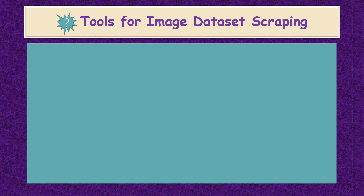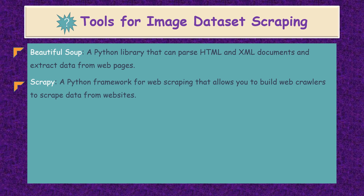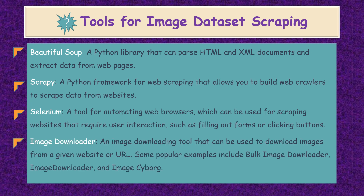Here we are discussing the tools for image dataset scraping. BeautifulSoup is a Python library that can parse HTML and XML documents and extract data from web pages. Scrapy is a Python framework for web scraping that allows you to build web crawlers to scrape data from websites. Selenium is a tool for automating web browsers, which can be used for scraping websites that require user interactions such as filling out forms or clicking buttons. Image Downloader is an image downloading tool that can be used to download images from a given website or URL. Some popular examples include Bulk Image Downloader, Image Downloader, and Image Cyborg.